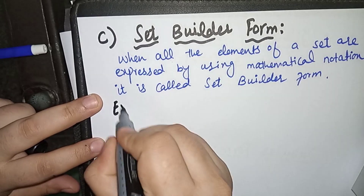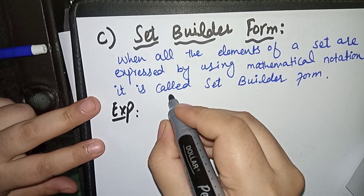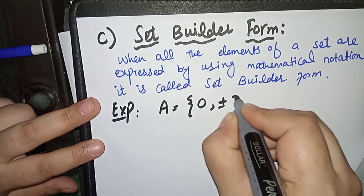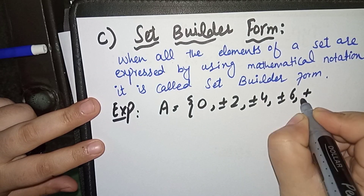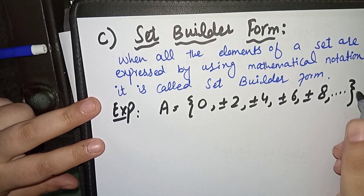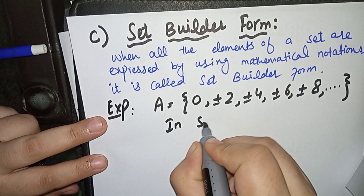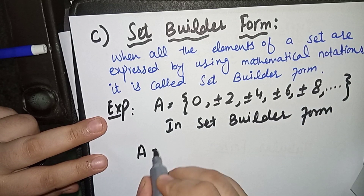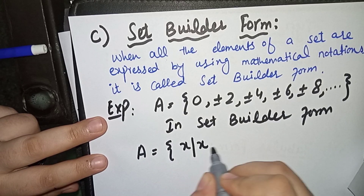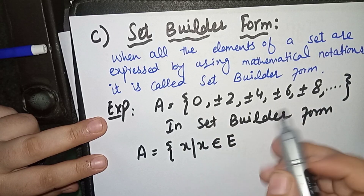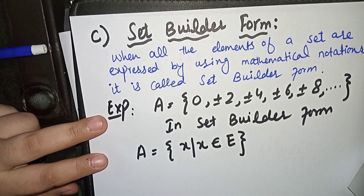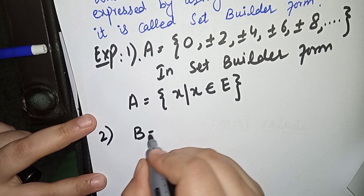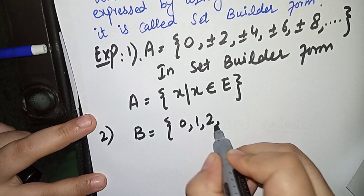Here is the first example of set builder form. I have the set A = {0, ±2, ±4, ±6, ±8, ...}. In set builder form, this is written as A = {x | x ∈ E}, where E represents even numbers. We use curly brackets, then x, followed by 'such that,' then x belongs to E — meaning all the above elements are even numbers, denoted by x.